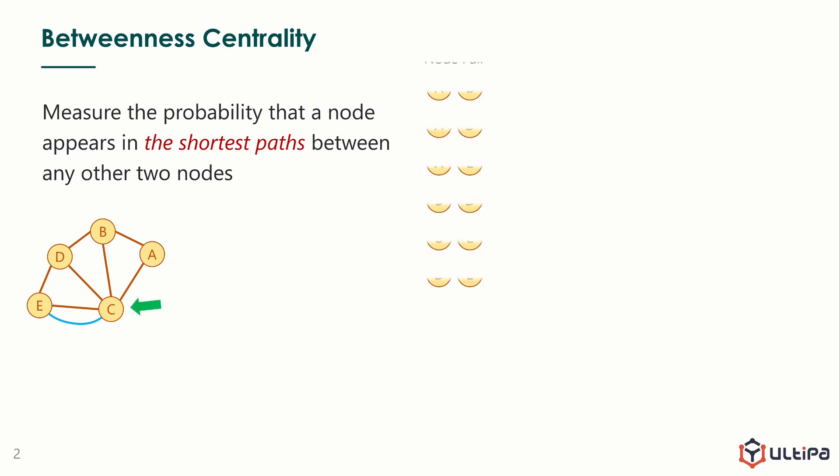First, list all node pairs other than node C and we got six pairs. To be more generic, for undirected graph that has n nodes, the number of node pairs except the target node can be calculated by this formula.